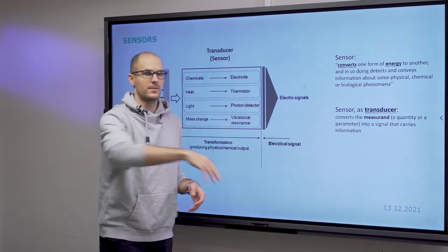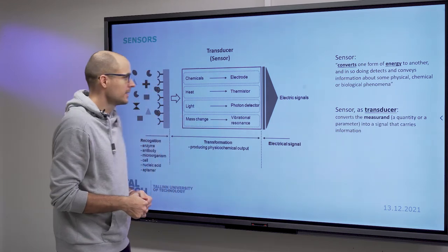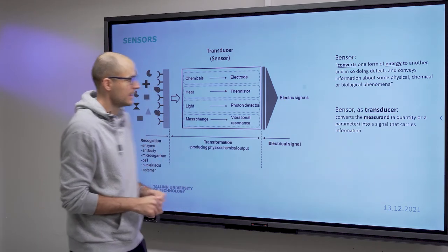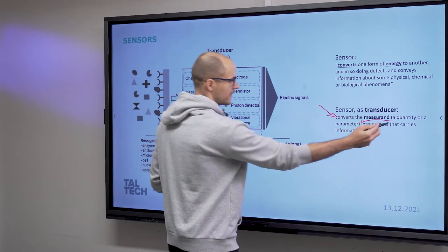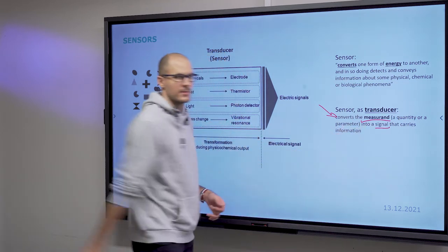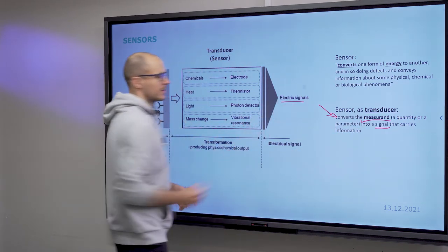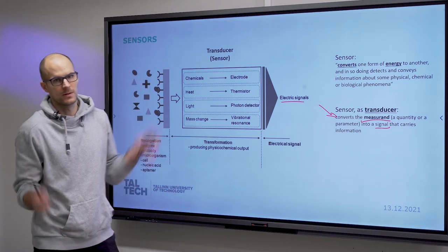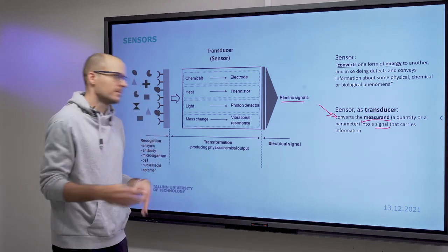That you can quantize, convert to digital. You also have to filter and amplify, obviously, but that's how it goes. The sensor is what converts the measurand—which is a quantity or a parameter—into a signal that carries the information. And by the signal, as I said, we typically mean an analog signal that you need to process, amplify, filter, and so on.